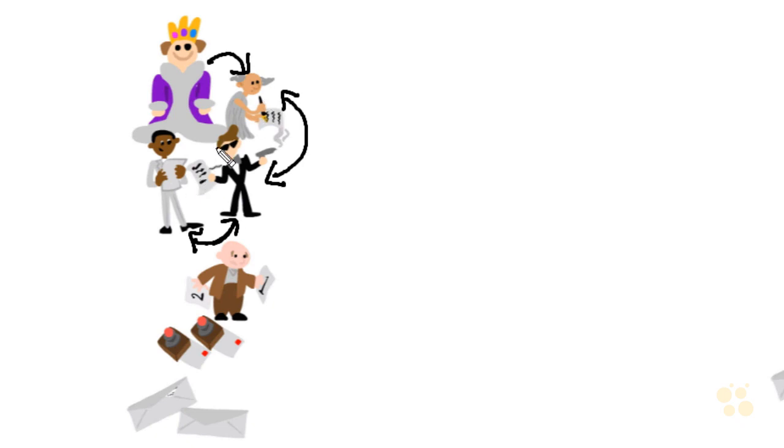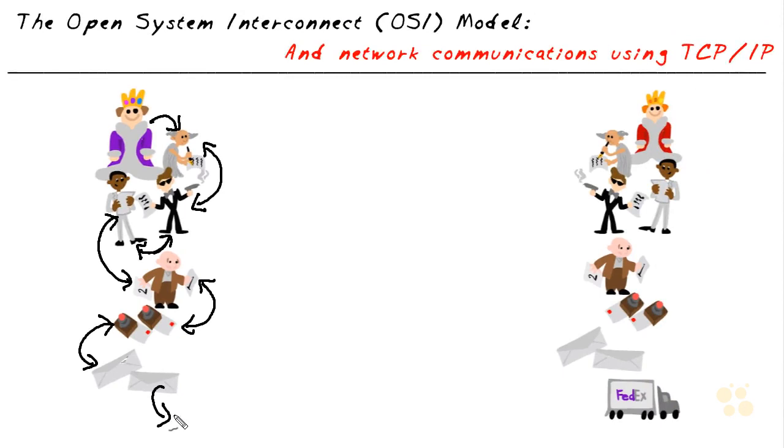The king doesn't jump down and talk to the middle manager or the mailroom. He only works directly with the scribe. The scribe has a relationship not only with the king, but also with the 007 agent. The 007 agent and the attorney also communicate with each other, but the attorney doesn't talk directly to the scribe — they go through the 007 agent. The attorney works directly with the middle manager, and the middle manager and mailroom communicate with each other, as do the mailroom and the envelope stuffer. The envelope stuffer has access to the carrier who's actually moving that information.